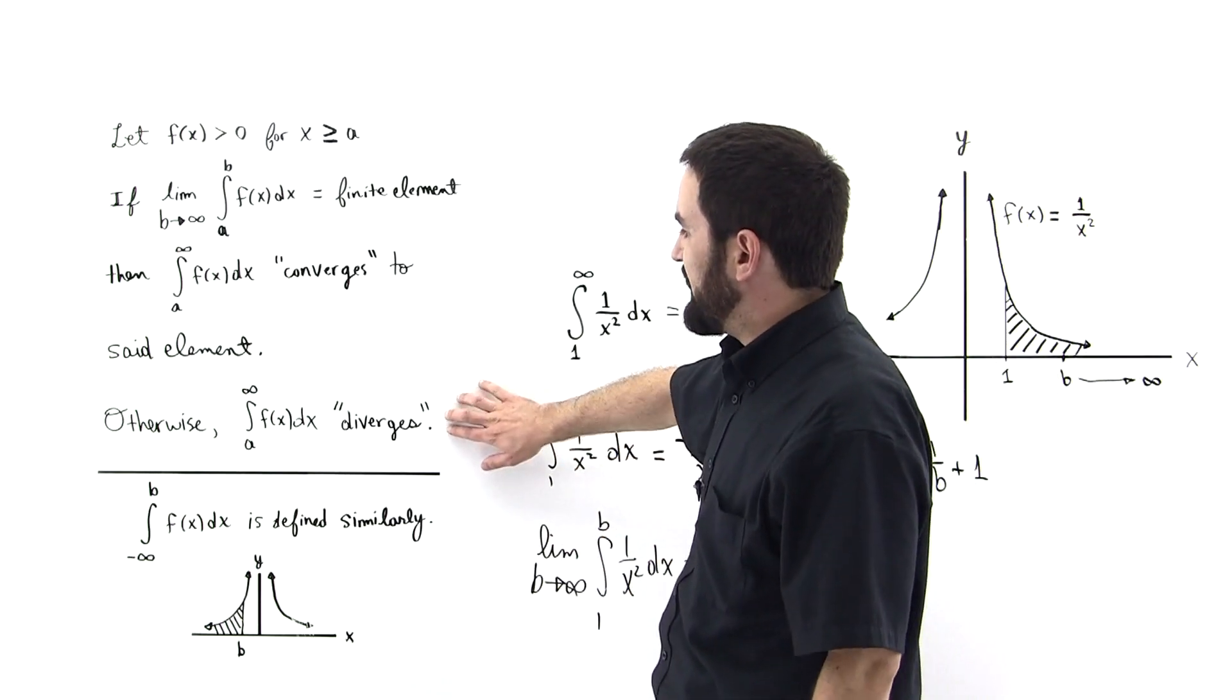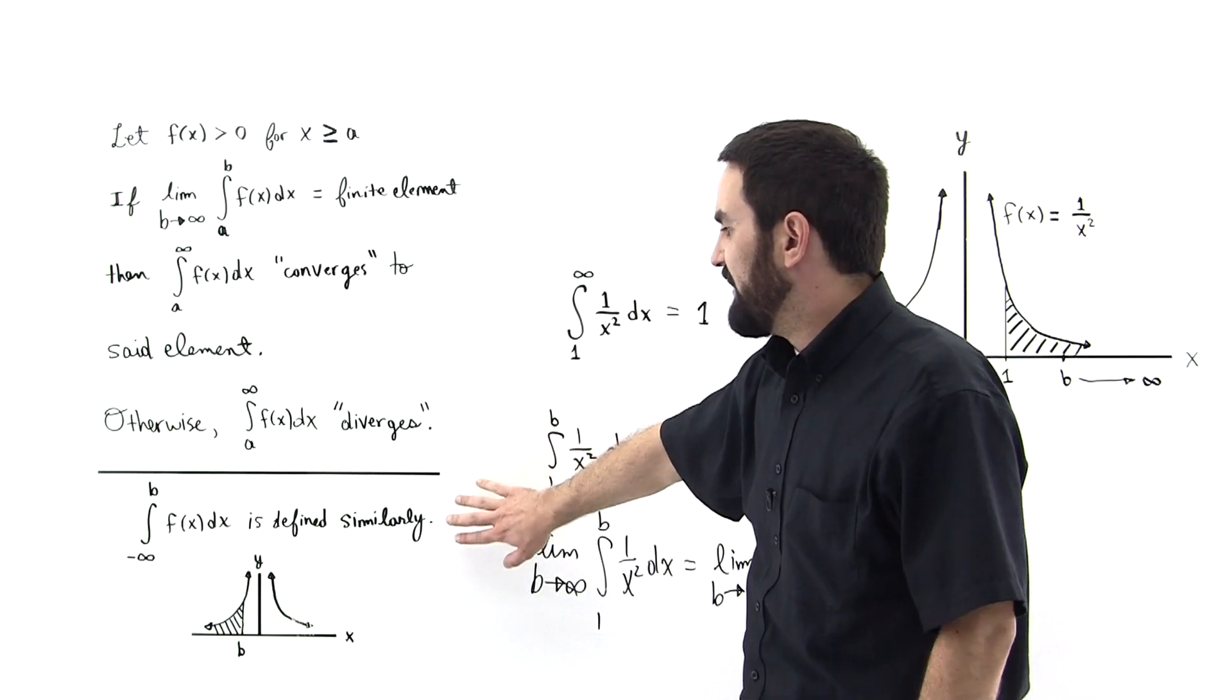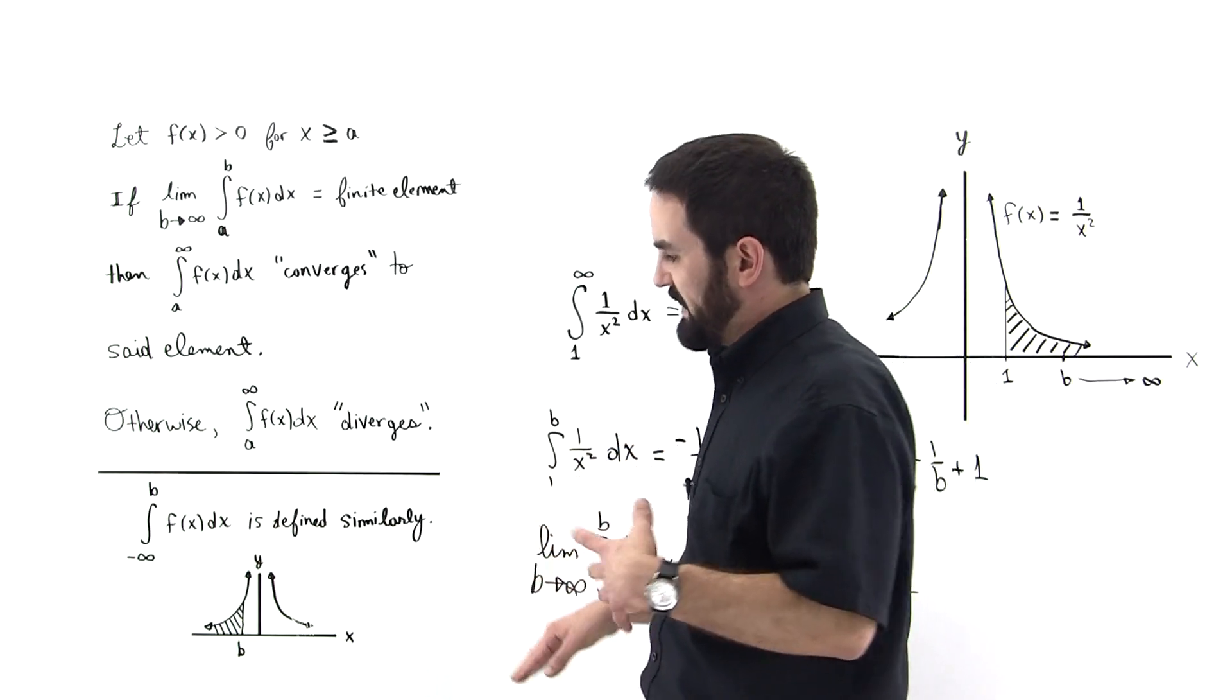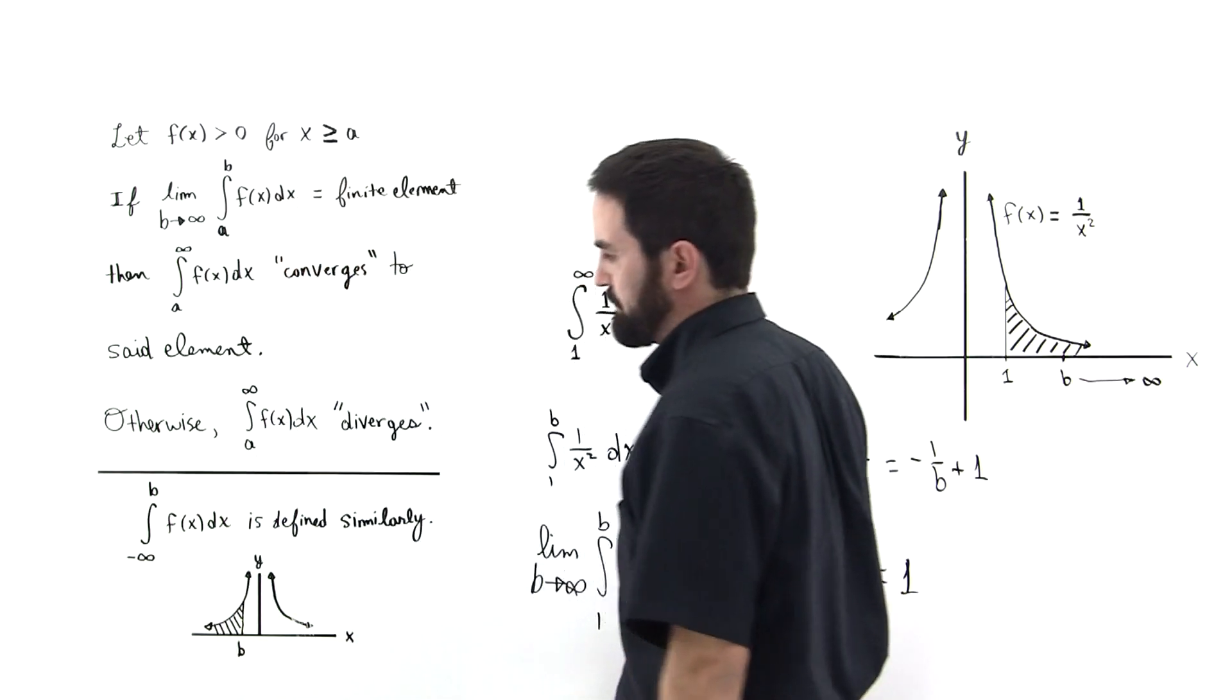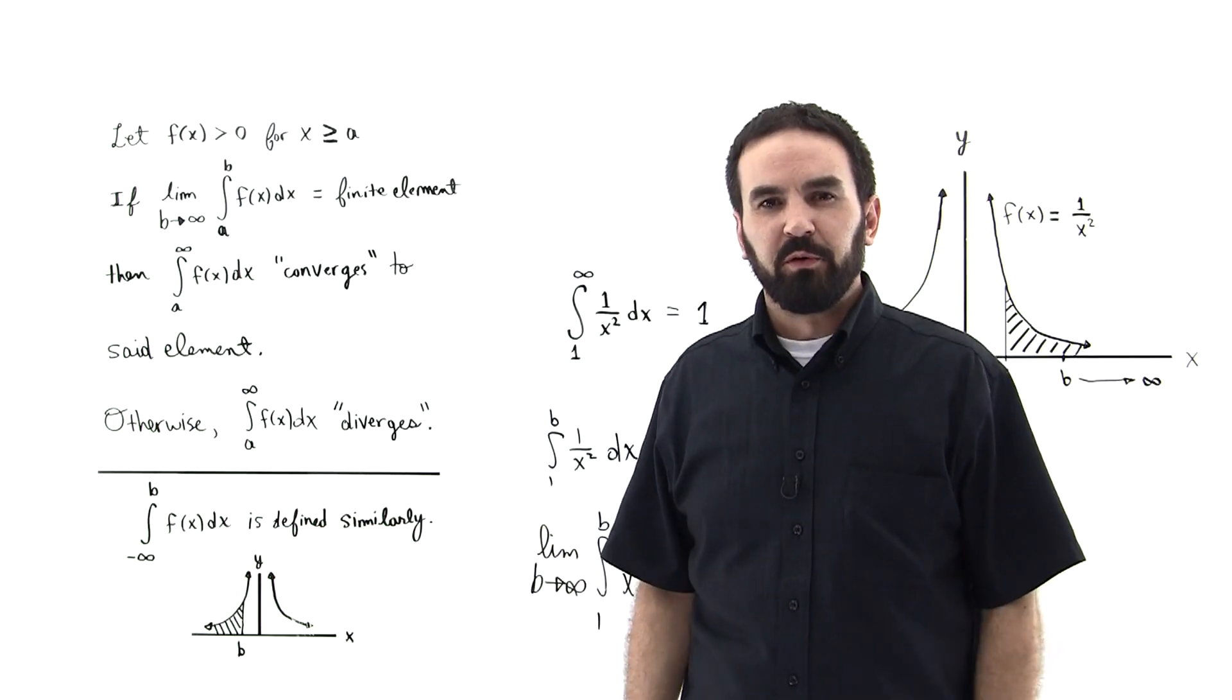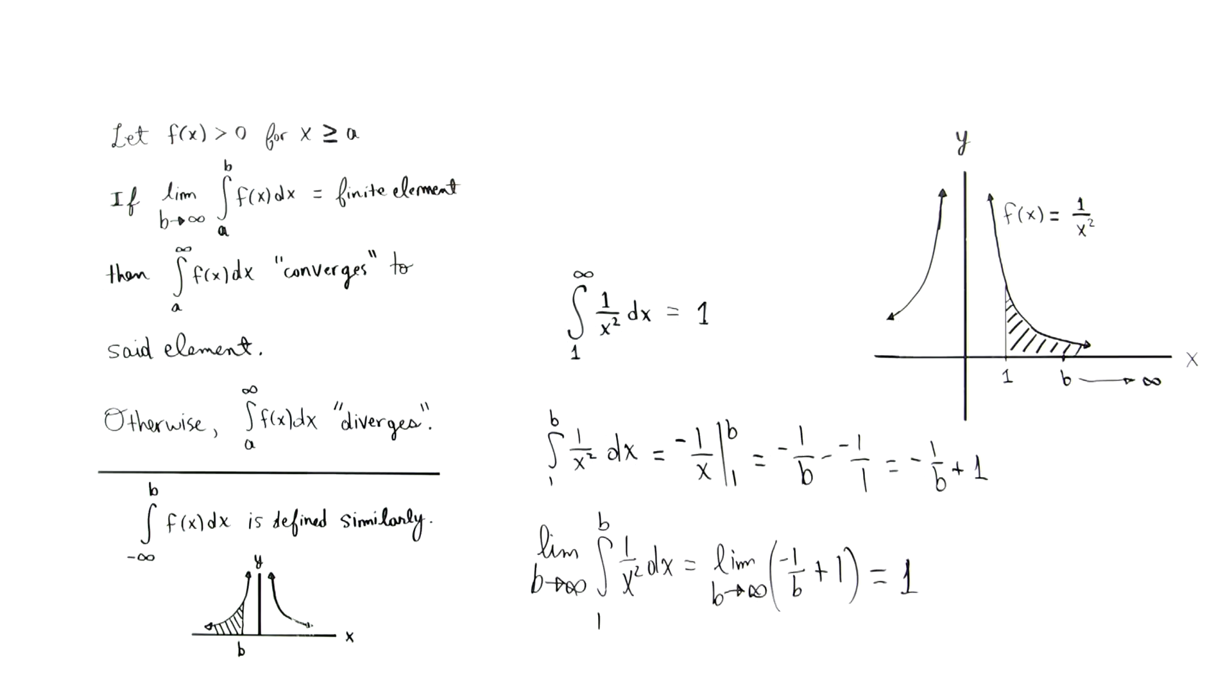Otherwise, the integral is said to diverge. So there will be instances where the integral will diverge, and this is the analog, the description of the argument when you're coming from negative infinity. Okay, so welcome to improper integrals. We're going to work a few examples now. I'm going to step out of the way and give you a clear screenshot.